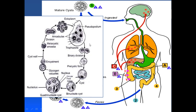This trophozoite form is then converted back into the pre-cystic form, which again forms a mature cyst. First the nucleus divides into two, and then into four. The chromidial bars and glycogen mass disappear in the mature cystic form. That mature cyst is then excreted in the feces, and when these feces contaminate food, the cycle repeats.